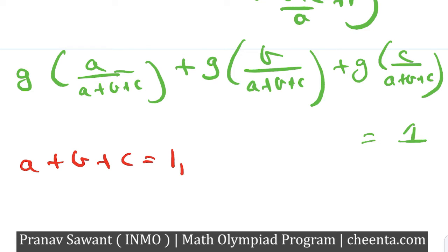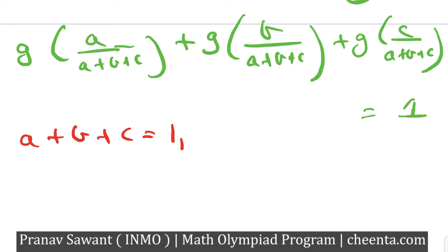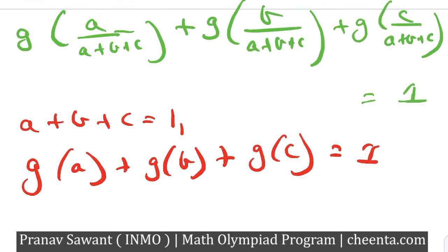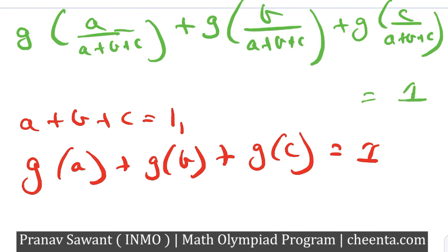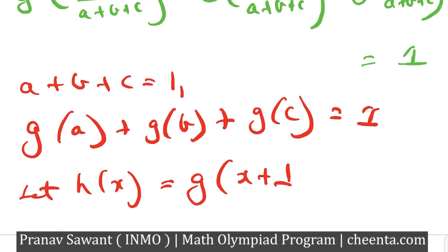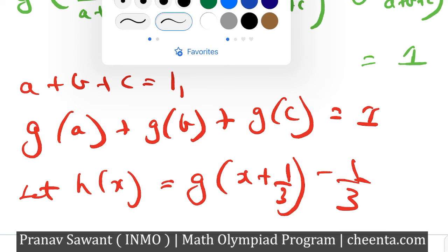So in the scenario where a+b+c equals one, we get g(a) + g(b) + g(c) equals one. This is really nice because it's something we can work with. Now I'm going to define another function: let h(x) = g(x + 1/3) − 1/3. We'll see in a moment why that makes sense.